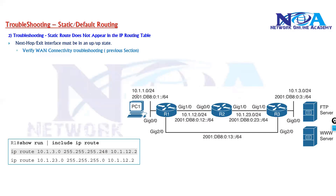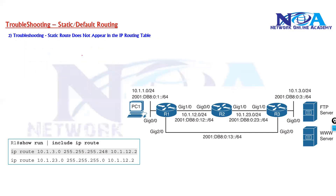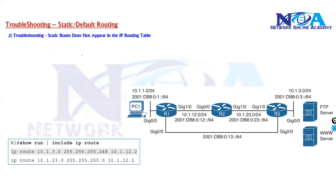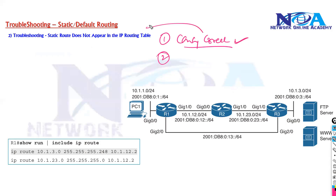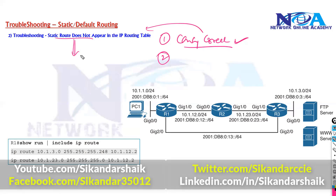So static route troubleshooting divides into two parts: the first is when you see the route but it is incorrect — check network ID, subnet mask, next hop address, and direction. The second is when you do not see the route at all — assuming the configuration is correct, check the next hop interface status and next hop reachability. I'll try to show some examples with trouble tickets in the next videos for more practical verification.